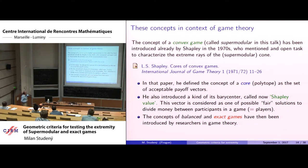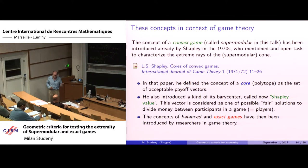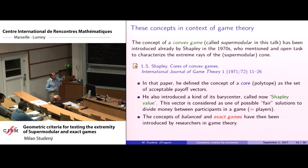Historically, convex games were introduced by Shapley in the 1950s, who also mentioned the open task of characterizing extreme rays of the supermodular cone. Shapley was a founder of cooperative game theory and received a Nobel Prize for the application of game-theoretic results in economics. The concept of the core was introduced there as a set of acceptable payoff vectors, and the Shapley value — a kind of barycenter of this polytope — is considered one possible fair solution to the game.